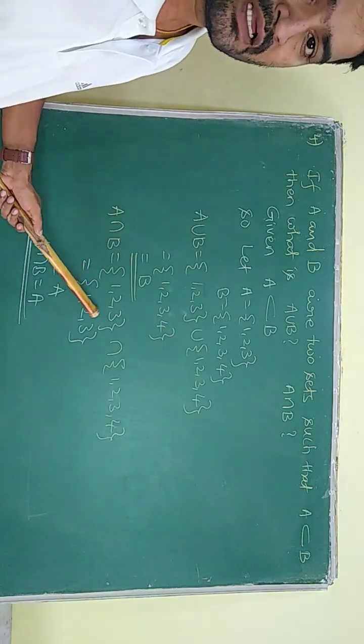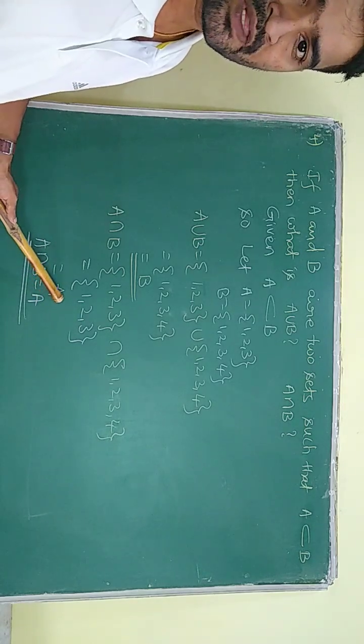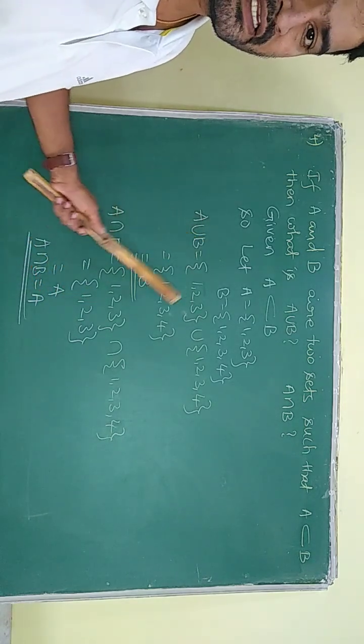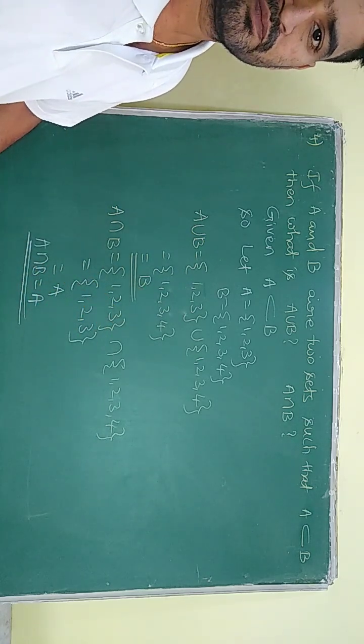See, A intersection B means just we have to write all the common elements of A and B, that is {1, 2, 3}, that is nothing but A. So A intersection B is A and A union B is B. By this we are going to conclude.